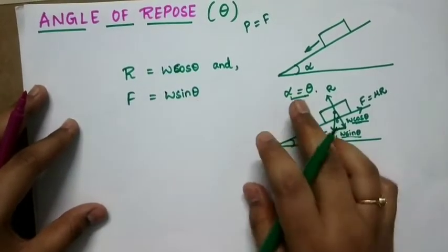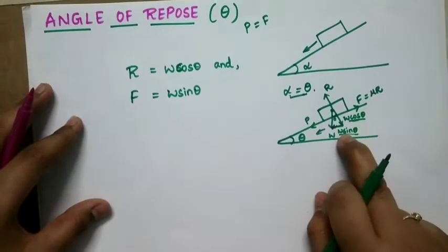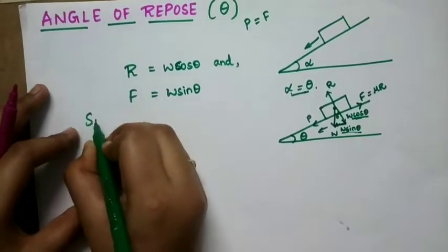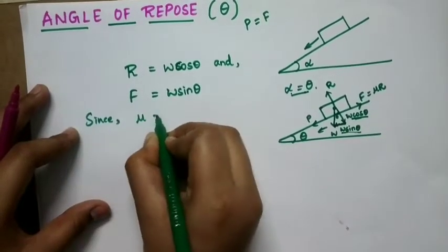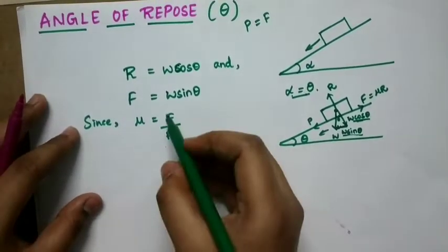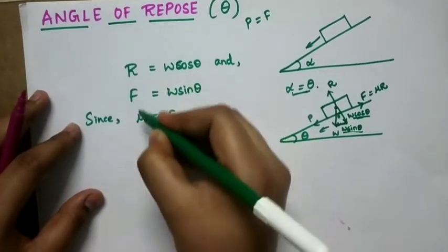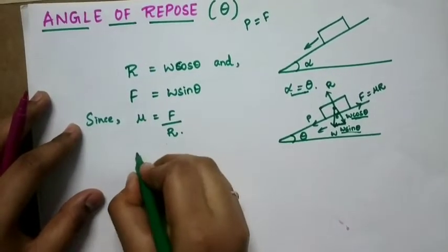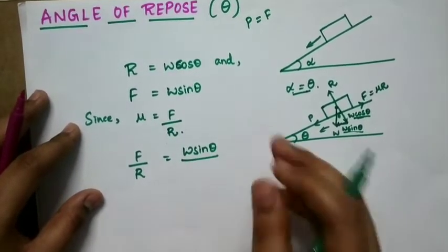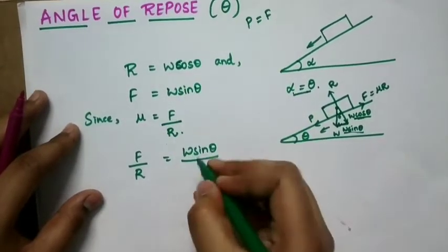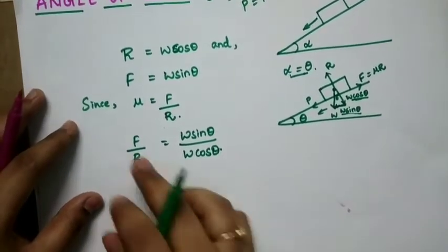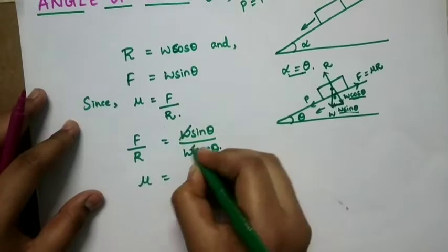In the limiting condition, when the body is ready to move, friction force equals the applied force. We know mu is equal to F divided by R. So F by R equals W sin theta divided by W cos theta.